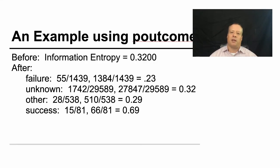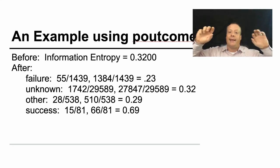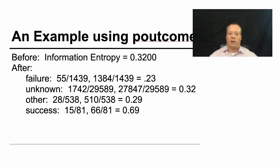So here's an example using poutcome, which is the outcome of the previous attempt. And there are four states in this class: failure, unknown, other, and success. Now, you already know that the basic information entropy at the very beginning is 0.32. That's the information entropy that we have when we begin this outcome. After, if it's a failure on the previous outcome, the entropy is 0.23. Because as you can see, there's actually a lot more nos than there are yeses in the failure.